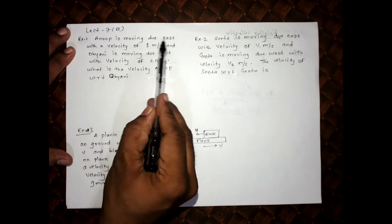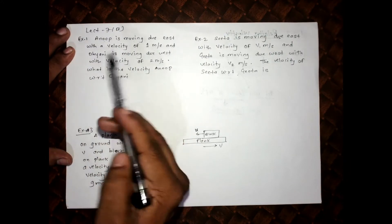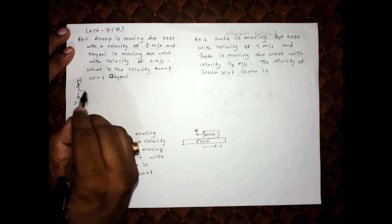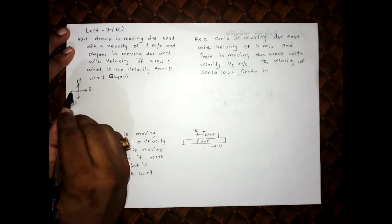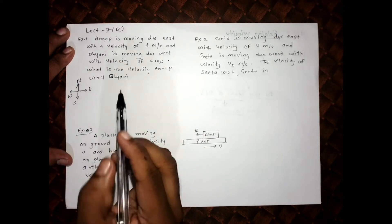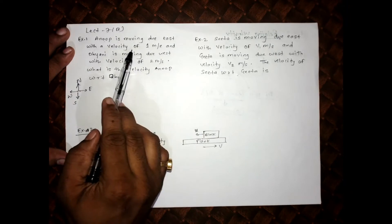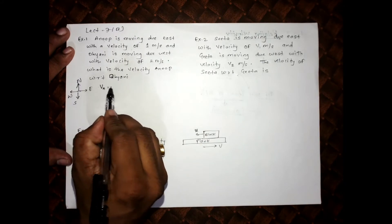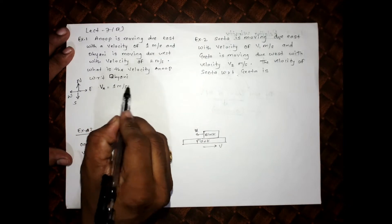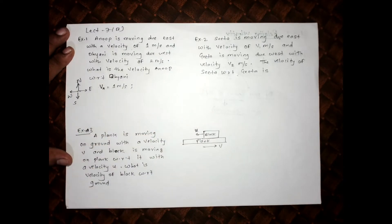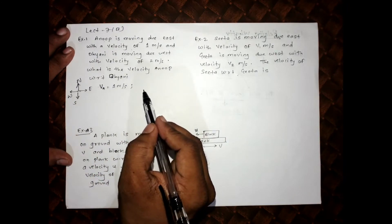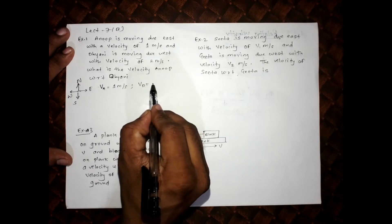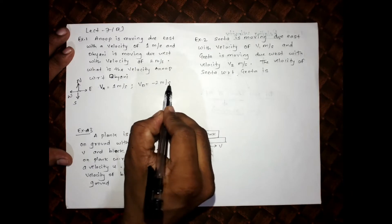Anoop is moving due east with a velocity of 1 meter per second. This is the north-south-east-west diagram. Anoop's velocity Va is 1 meter per second. Dhyani is moving due west with a velocity of 2 meter per second, so the velocity of Dhyani should be minus 2 meter per second.